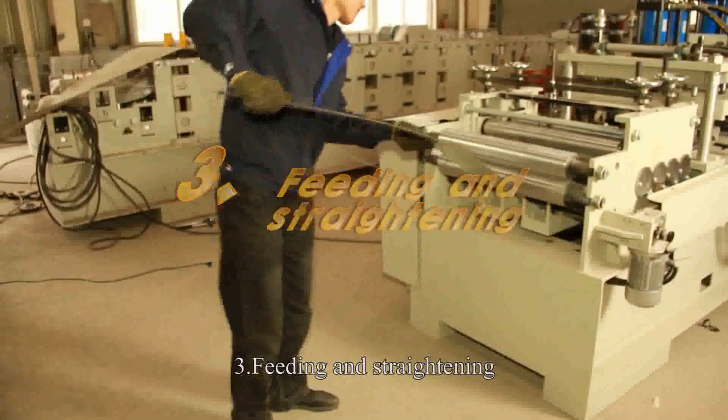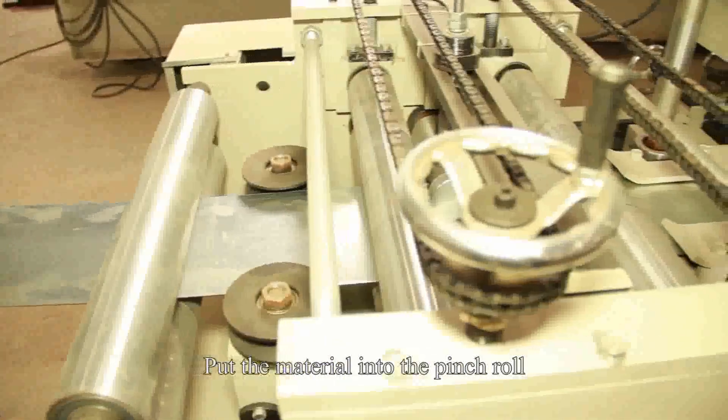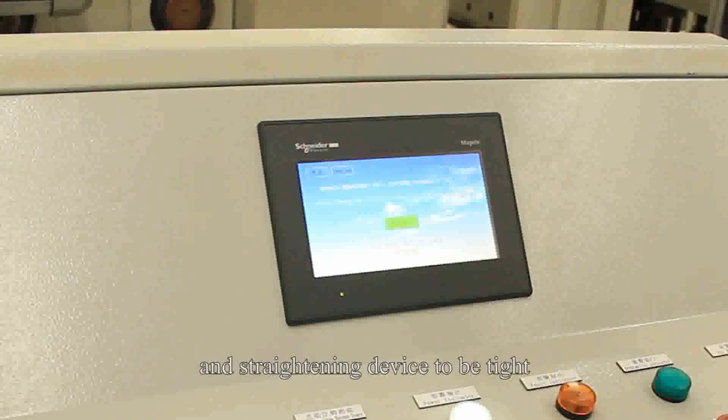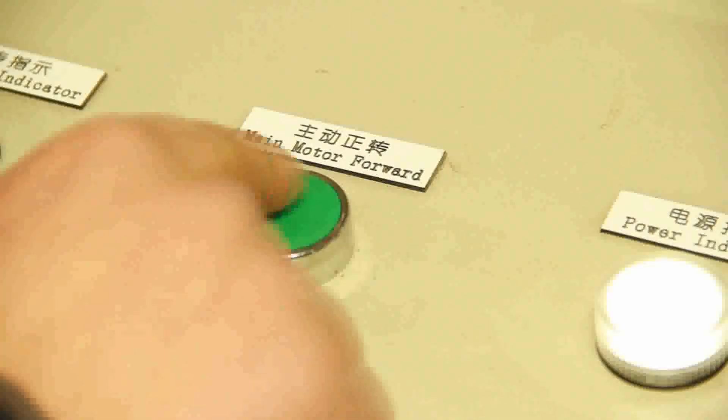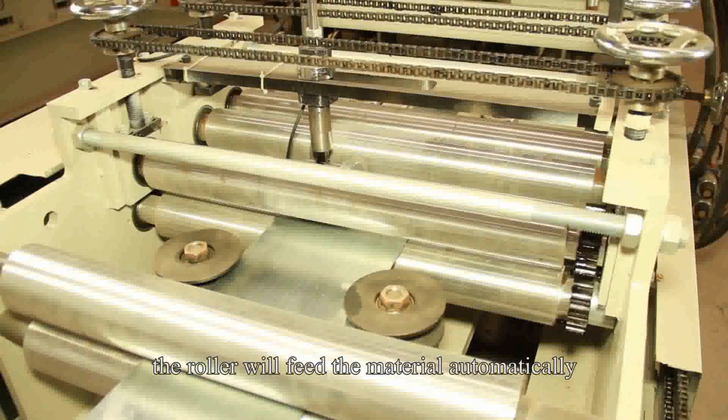Number 3: Feeding and Straightening. Put the material into the pinch roll and turn the hand wheel of the feeding and straightening device to be tight. Then press the Forward Start button. The roller will feed the material automatically.